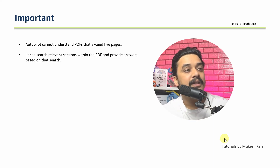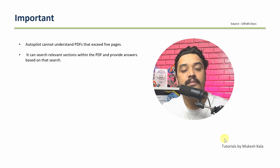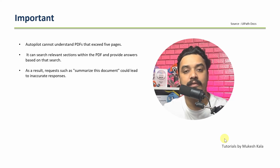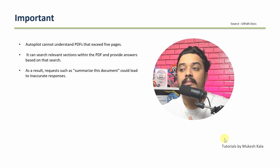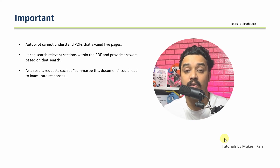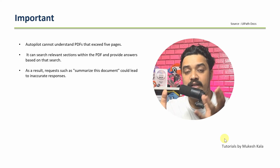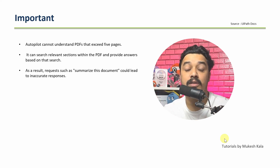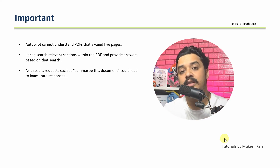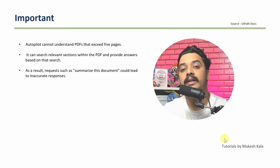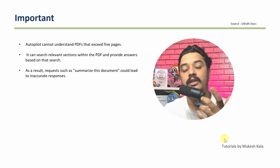The next point: Autopilot can search relevant sections of PDFs and provide answers based on that search. However, broad text requests such as 'summarize the document' could lead to incorrect results. Currently, when you upload a file, it analyzes it and retrieves relevant sections when you ask a question. If you just say 'summarize this document,' you might get an irrelevant response — for that, you need to use some advanced techniques.